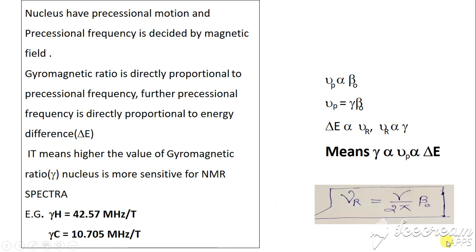These derivations explain the concept. In my next lecture I will try to explain why tetramethylsilane (TMS) is used as a reference standard for proton NMR spectroscopy. Thank you.